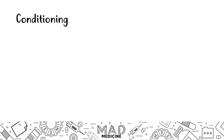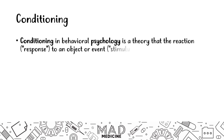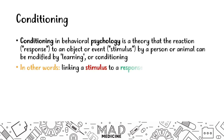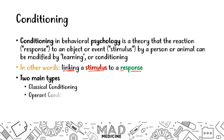Let's talk about conditioning first, very briefly. Conditioning is a very well-known theory in behavioral psychology and psychiatry. The TLDR version of this definition is that conditioning is a process of linking a stimulus to a response. There are two main types of conditioning: classical conditioning and operant conditioning. Today we are simply going to be talking about classical conditioning.